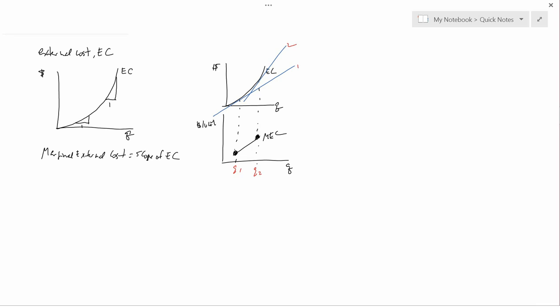And also because people's willingness to pay or willingness to accept, which are formal terms that we'll get to later, depend on their income. And so you're usually giving a lot more weight to rich people than the poor people when you measure things in that way.